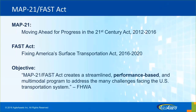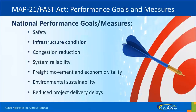Both MAP-21 and FAST Act include provisions to make federal surface transportation more streamlined, performance-based, and multimodal, and address the challenges the U.S. transportation system is facing. Those challenges include improving safety, maintaining and improving the condition of highway infrastructure assets like bridges and pavement, reducing traffic congestion, improving efficiency of the system and freight movement, protecting the environment, and reducing delays in project delivery.